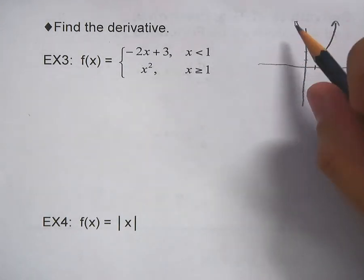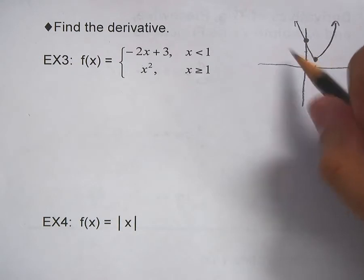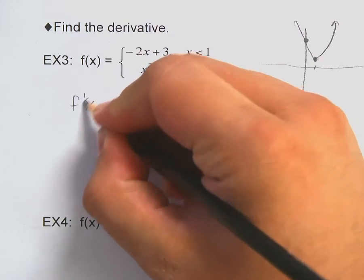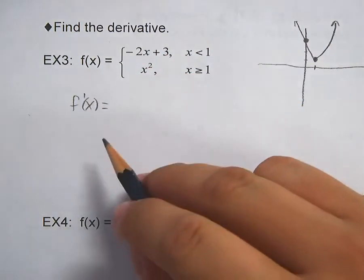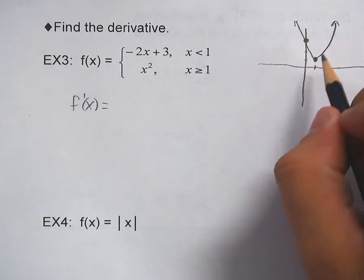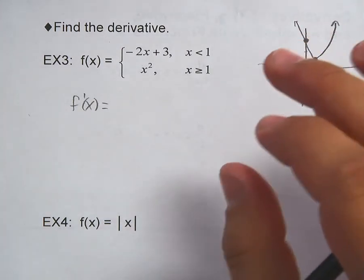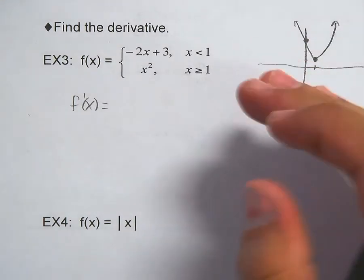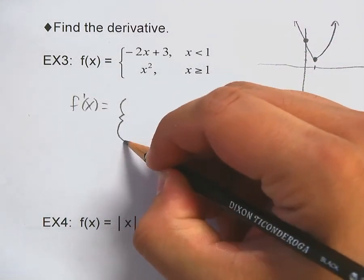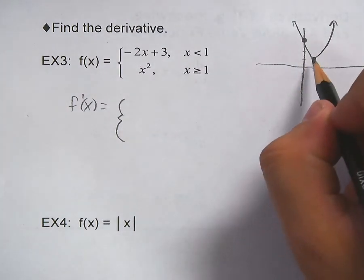Even though this may not be differentiable at a certain point, we can still find the derivative of it. We can find the derivative of these pieces individually — I can find the slope of this line and the slope of this parabola. I'm splitting the function, so I'm going to split my derivative as well. I can't find the derivative as a whole because it has a cusp right here.